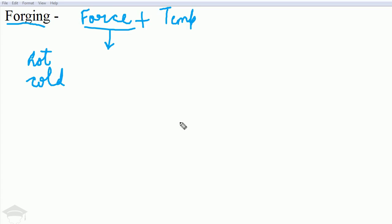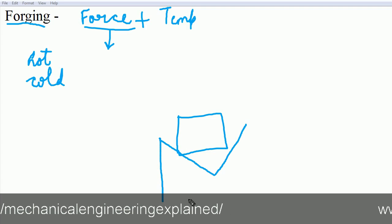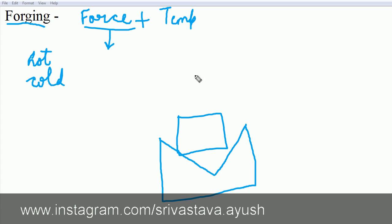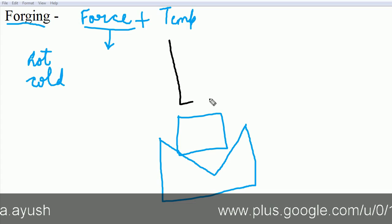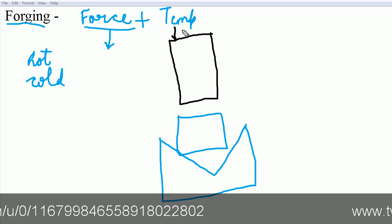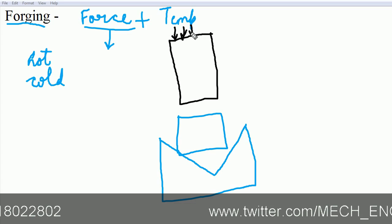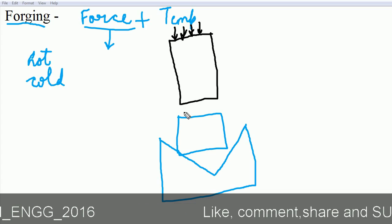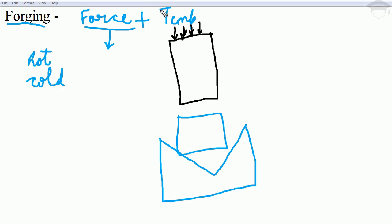Basically we heat a metal block — suppose this is a metal block — we heat it, that is application of temperature. Then we place it on a suitable die. Now we apply force by a huge hammer, and this hammer is driven by hydraulic force.